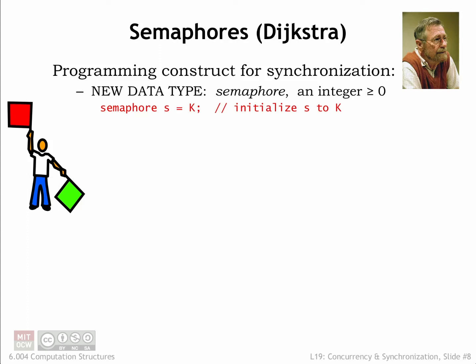What we'd like to do is to create a single abstraction that can be used to address all our synchronization needs. In the early 1960s, the Dutch computer scientist Edsger Dijkstra proposed a new abstract data type called the semaphore, which has an integer value greater than or equal to zero. A programmer can declare a semaphore, as shown here, specifying its initial value. The semaphore lives in a memory location shared by all the processes that need to synchronize their operation.